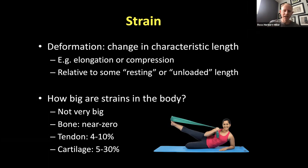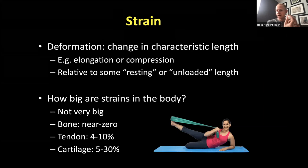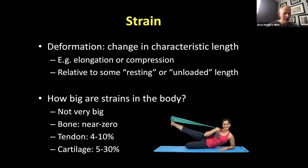Strain is typically expressed not as an absolute change in length, but as a percent change in length — relative to the unloaded or resting length of the structure. For example, if the cross-section of this foam is about two centimeters wide, and I press on it until it's compressed by one centimeter, I imposed about a 50% strain — one centimeter is 50% of two centimeters. So I compressed it by 50% of its resting length.